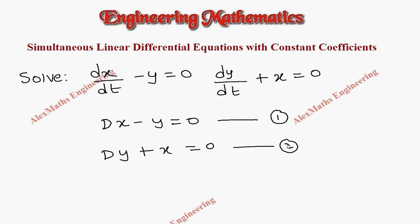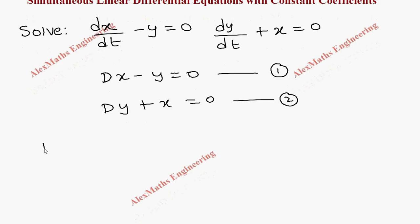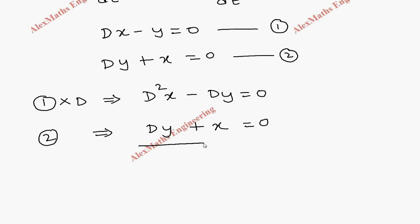Now, the first equation we are going to multiply by D. First equation into D gives us D²x minus Dy equal to 0. And second equation we will write as it is. That is Dy plus x equal to 0. By adding both equations, we can cancel plus Dy and minus Dy. So the remaining part of the equation is D²x plus x equal to 0. We eliminated y.